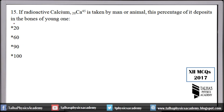Number 15 (first set): If radioactive calcium is taken by a man or animal, what percentage of it is deposited in the bones of a young one? The answer is 90%. This is from chapter 20 where we study tracers. A young person absorbs 90% calcium, whereas an old-aged person can only absorb 40% calcium.